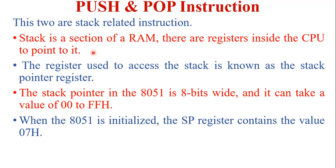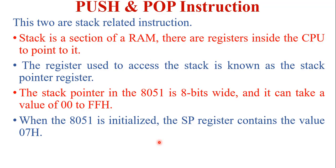There is a register inside the CPU to point out this stack area — that register is called the stack pointer. In the 8051 microcontroller, the stack pointer register is basically 8 bits wide and it can take a value from 00H to FFH. When the 8051 is initialized, the stack pointer register contains the value 07H. So 07H is the default value for the stack pointer.